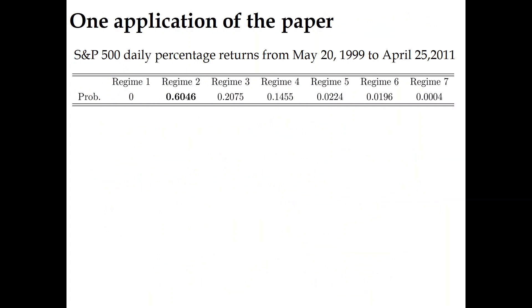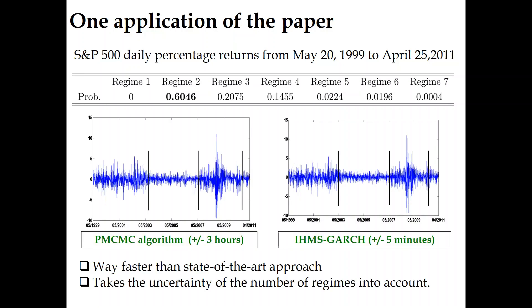To illustrate our approach, we focus on the S&P 500 financial log returns for this short presentation. Using our infinite hidden Markov-switching GARCH model, we show that the series exhibits a number of regimes ranging from 2 to 7. In addition, we show that we obtain the same inference as the state-of-the-art estimation approach.